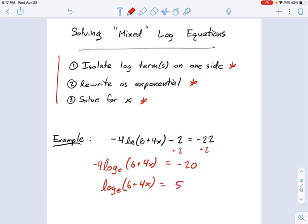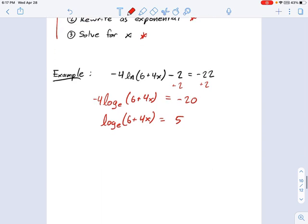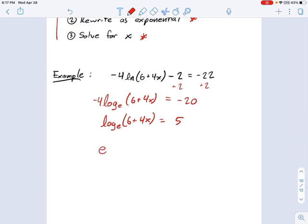And at this point, we're ready for step 2. I'm going to rewrite this as an exponential. So this is, if you remember your properties of logarithms and how they go into exponentials, this means e^5 = 6 + 4x.